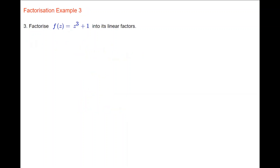In example 3, we're asked to factorise the cubic z cubed plus 1 into its linear factors. We use the factorisation of the sum of two cubes, since we really have z cubed plus 1 cubed. Using that formula, we get z plus 1 times z squared minus z plus 1. Look up that factorisation if you can't remember it straight away.